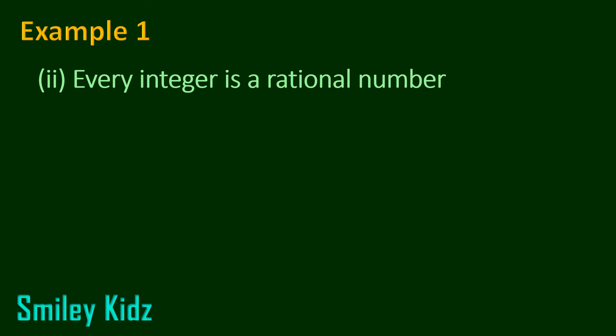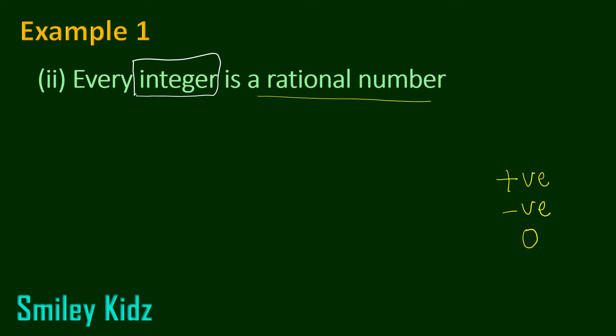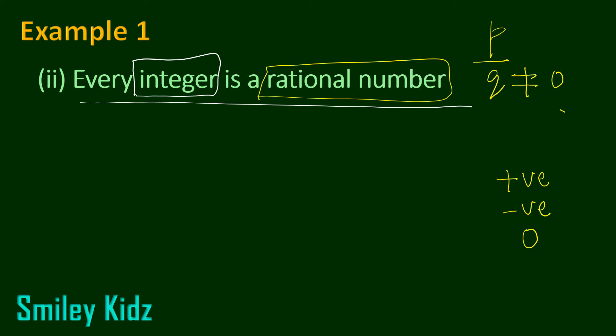Then we move on to the second statement: every integer is a rational number. What is an integer? We have seen that integers are the collection of positive numbers, negative numbers, and 0. Then, what are rational numbers? Rational numbers are numbers which can be expressed in the form of P by Q, where P and Q are integers and Q should not be equal to 0. The question says that every integer is a rational number — let's see.